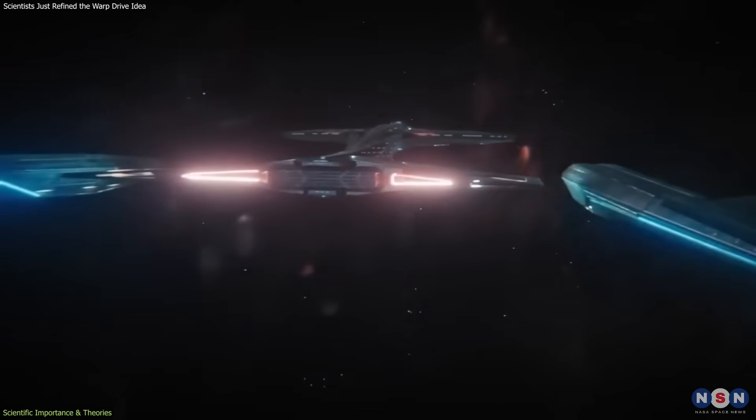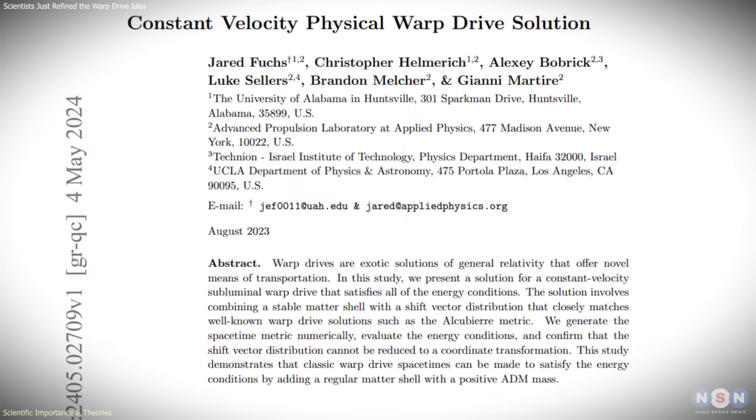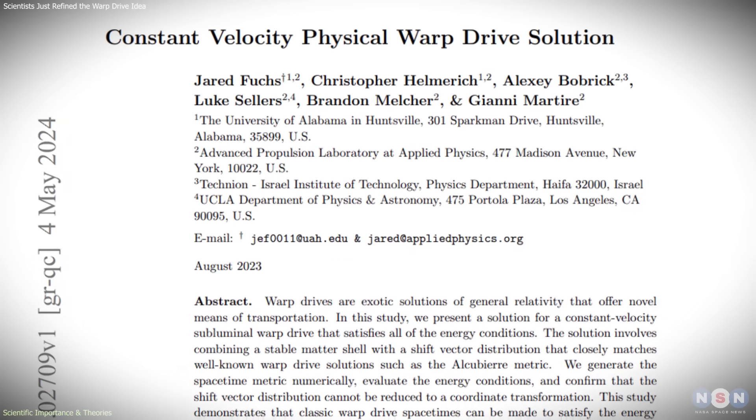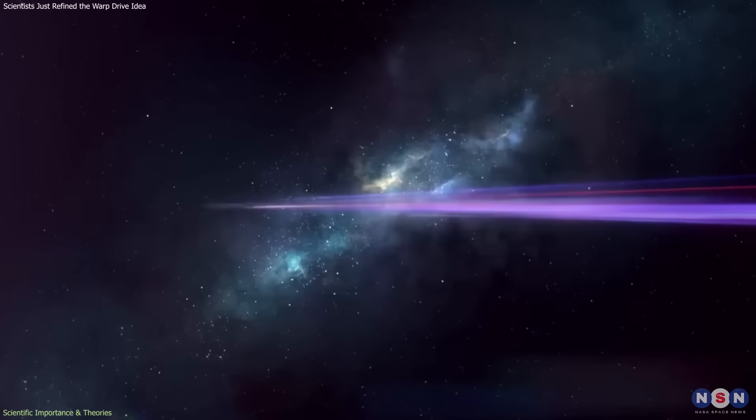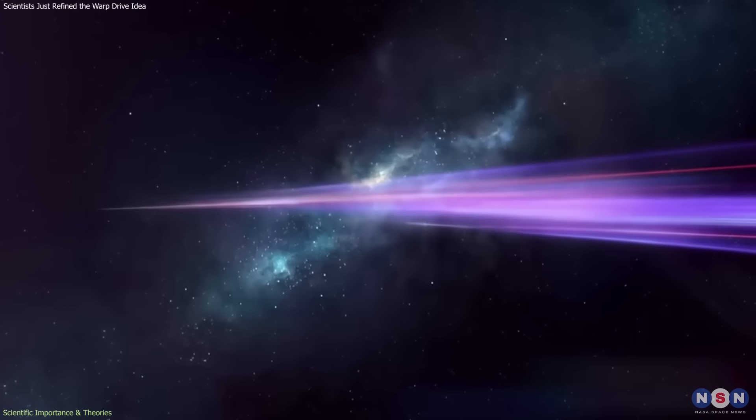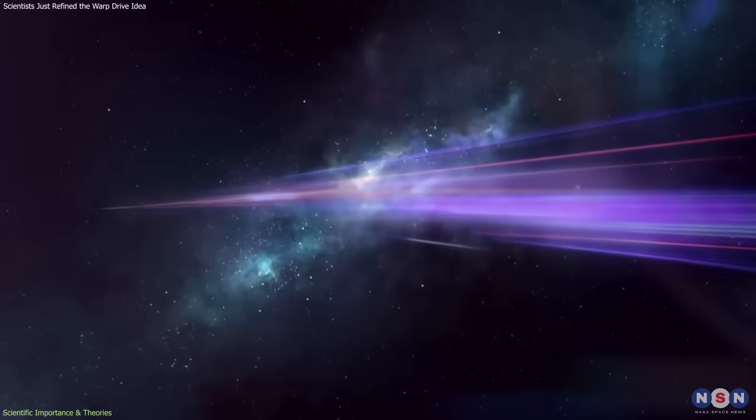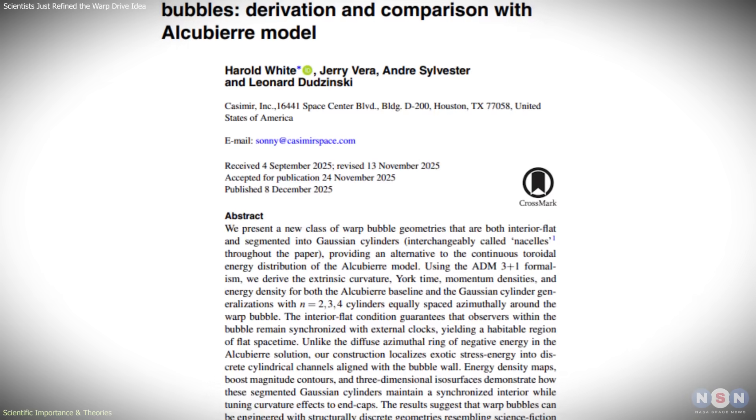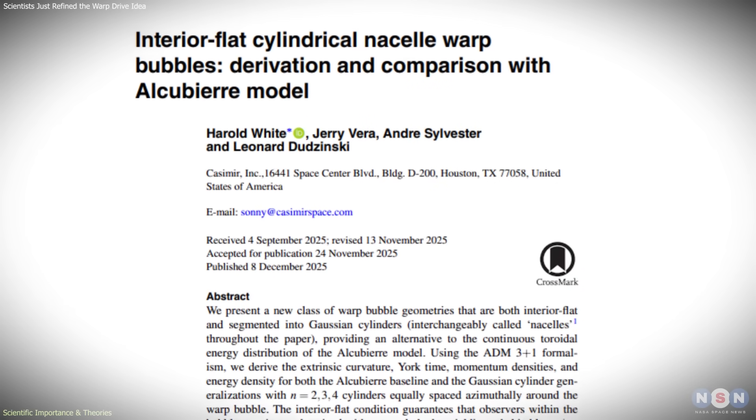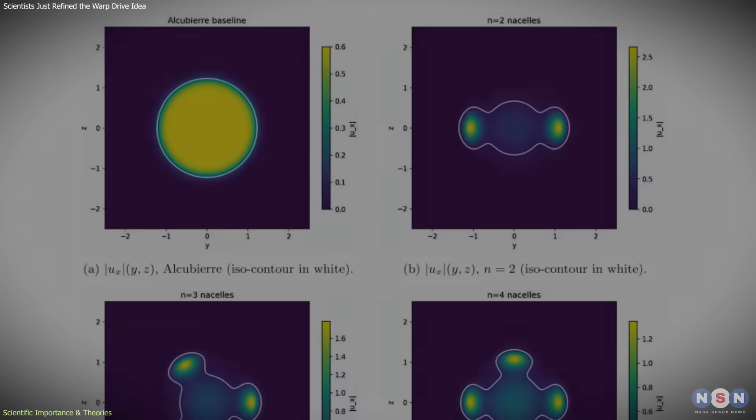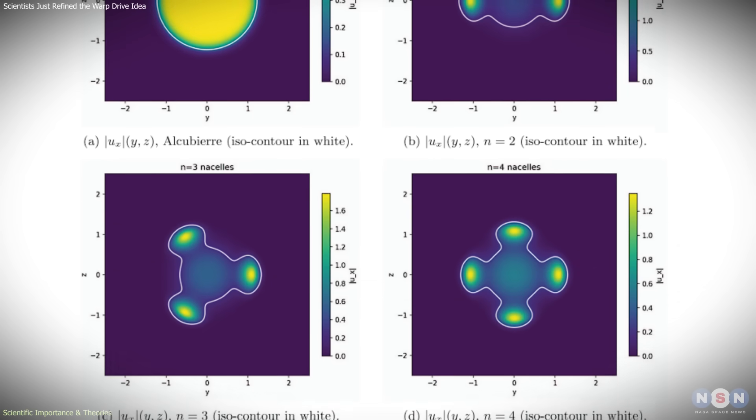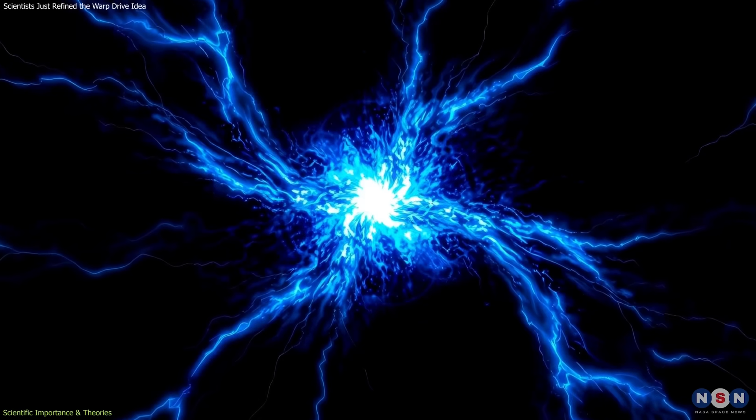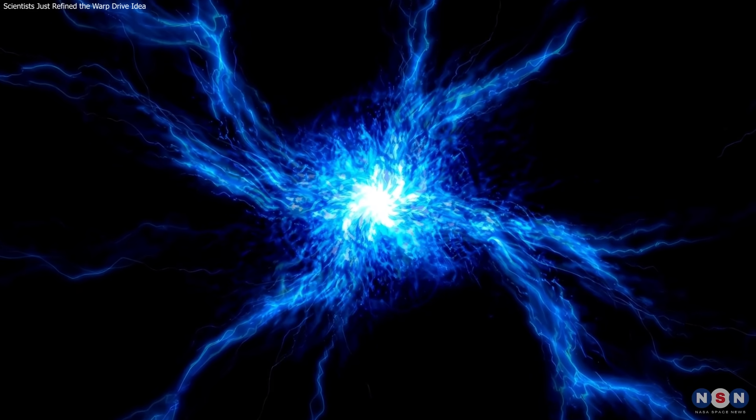Alternative warp concepts exist, including models that avoid exotic matter by accepting lower speeds or extreme energy costs. So far, none offer a clean solution that preserves both physical realism and usefulness. In this context, the study does not overturn prior conclusions. It refines them. It narrows uncertainty by showing which assumptions can change and which cannot. That is why the work is taken seriously within the field.